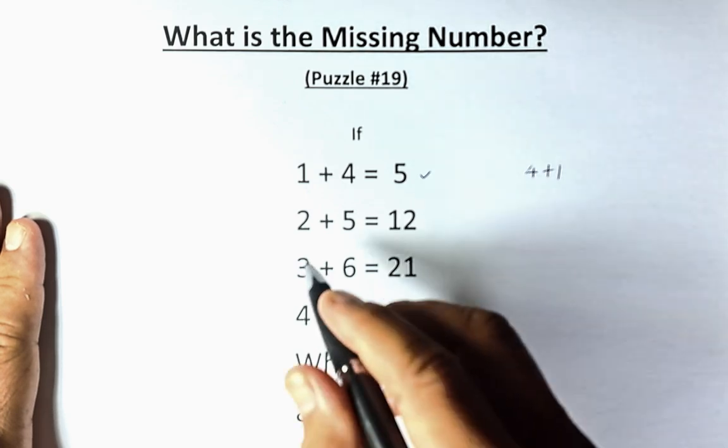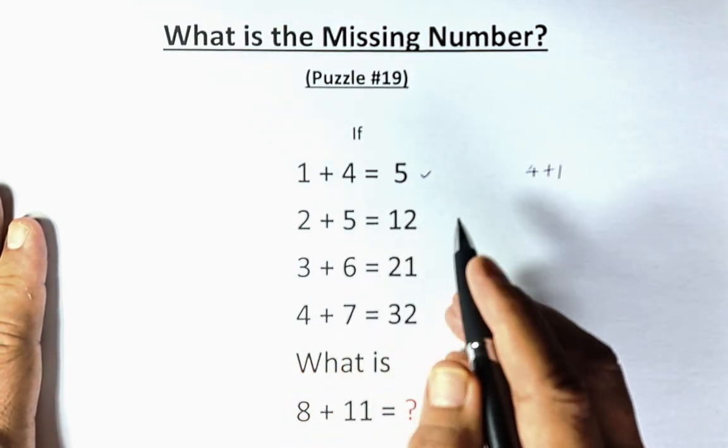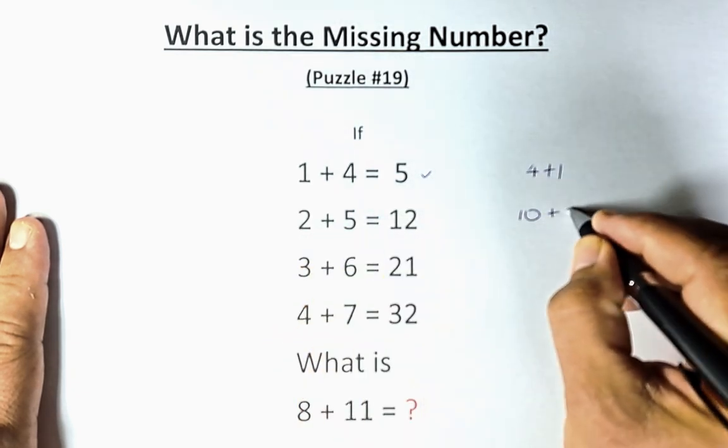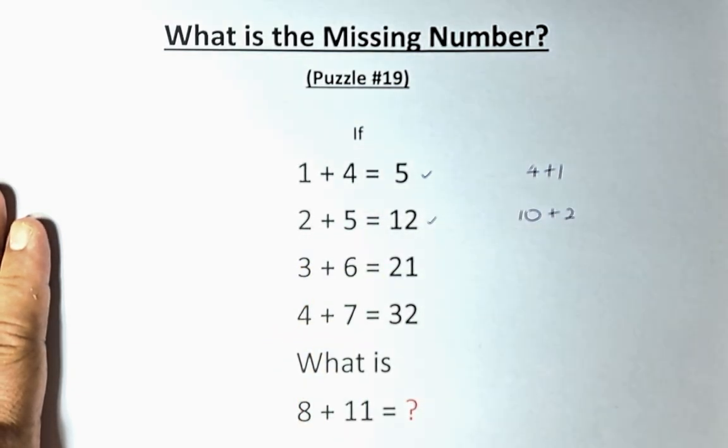Similarly, for the second row, 2 plus 5 equals 12. So you multiply 2 times 5, which is going to be 10, and you're going to add the first number, which is 2, and that will give us 12.